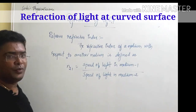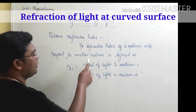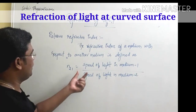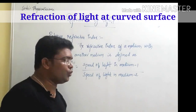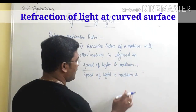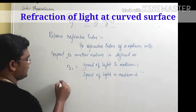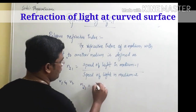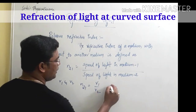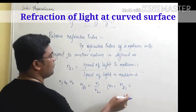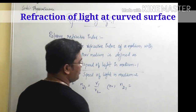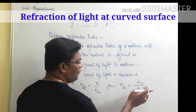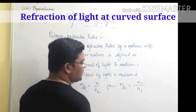The next concept is relative refractive index. The refractive index of medium 1 with respect to medium 2 is defined as the ratio of the speed of light in medium 1 to the speed of light in medium 2. If V1 and V2 are the speeds of light in medium 1 and medium 2, then it is written as N21 = V1/V2. Alternatively, it can be written as N21 = N2/N1, meaning the relative refractive index equals the refractive index of the second medium divided by the refractive index of the first medium.